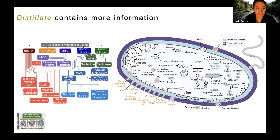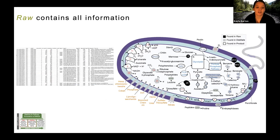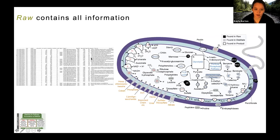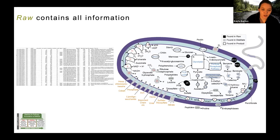One level higher is the raw, which contains all information — every annotation for every gene in every genome. From the raw, you can add other things to your genome cartoon specific to your study, such as multiheme c-type cytochromes or different carbon substrates. The real strength of DRAM is that the curated metabolism lets you build out most of a genome cartoon from the product and distillate, then go to the raw for things you specifically care about.